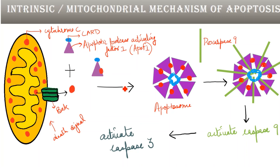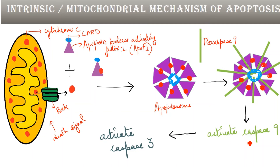To the apoptosome, the enzyme pro-caspase 9 — the initiator caspase in the intrinsic pathway — binds. Pro-caspase 9 binds to the apoptosome and comes into proximity with the CARD domain as well as with other pro-caspases. This results in auto-cleavage of pro-caspase 9 molecules by each other, resulting in activation of caspase 9. Caspase 9, as an initiator caspase, then activates the executioner caspase 3.